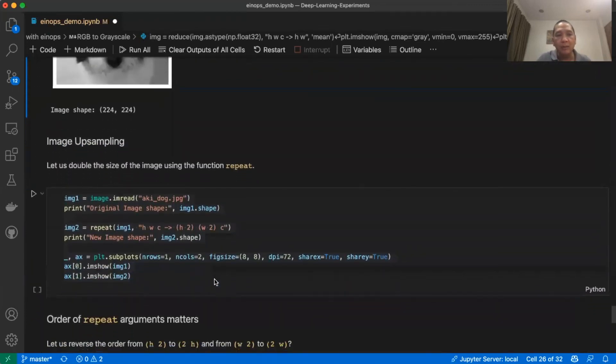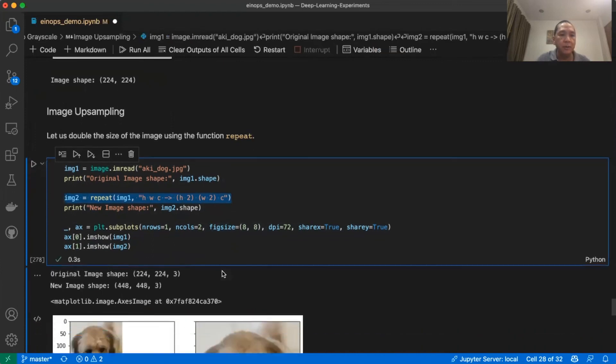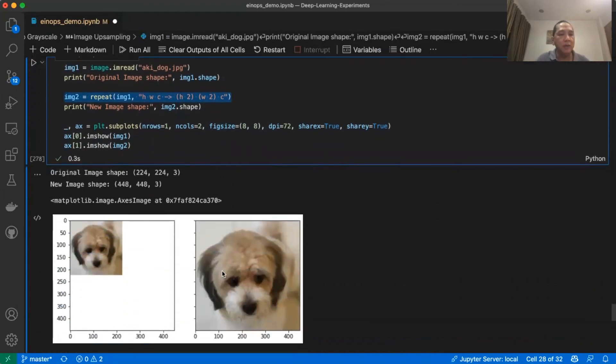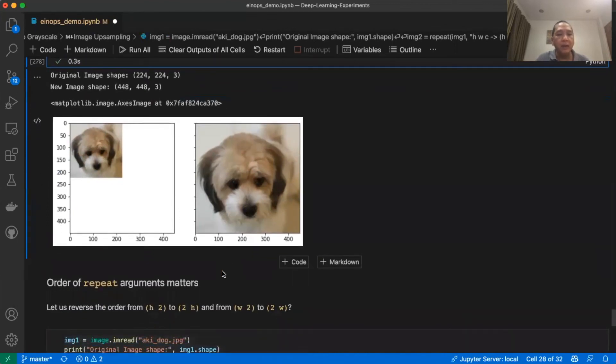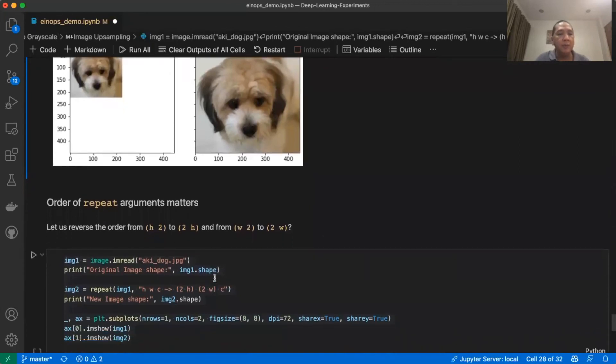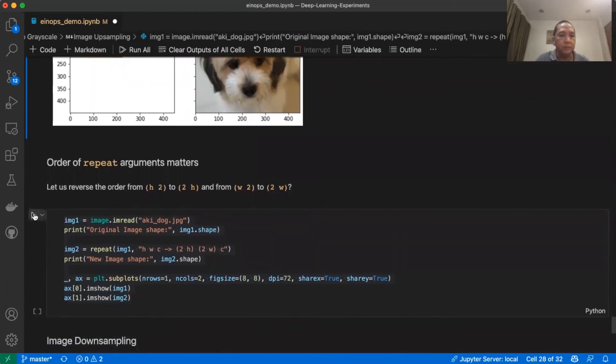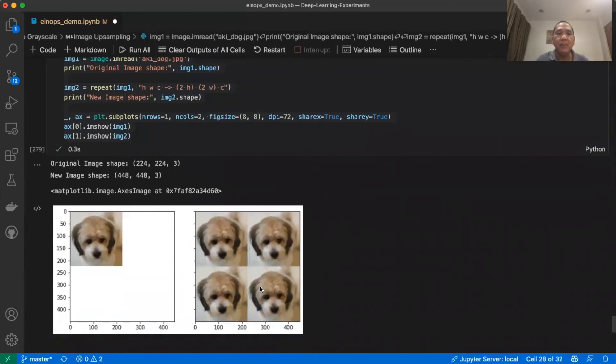The next example is image upsampling. Let us double the size of the image using the function repeat. Let's execute this code. And we can see that the image size has doubled. Take note that the order of repeat arguments matters. Let us reverse, for example, the order from H2 to 2H and from W2 to 2W. This is not actually image upsampling, but simply a repetition across the rows and columns.